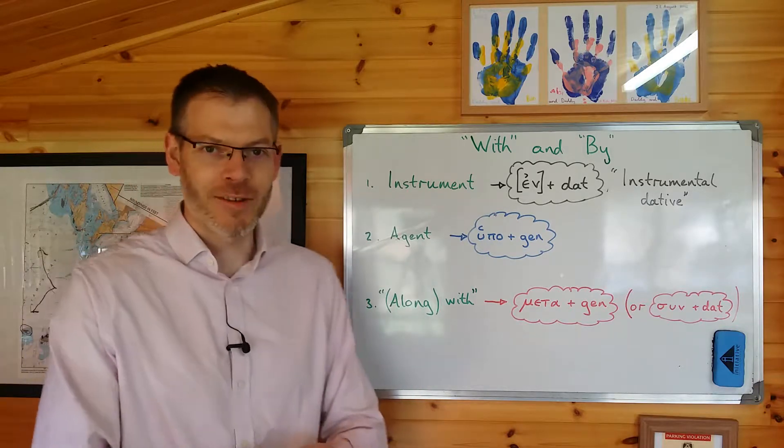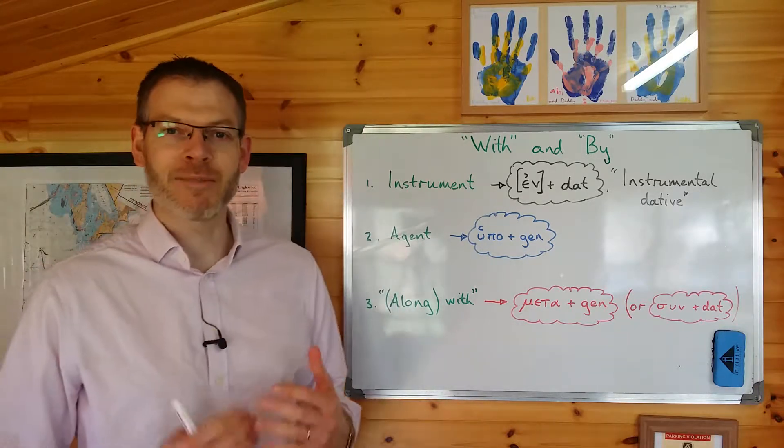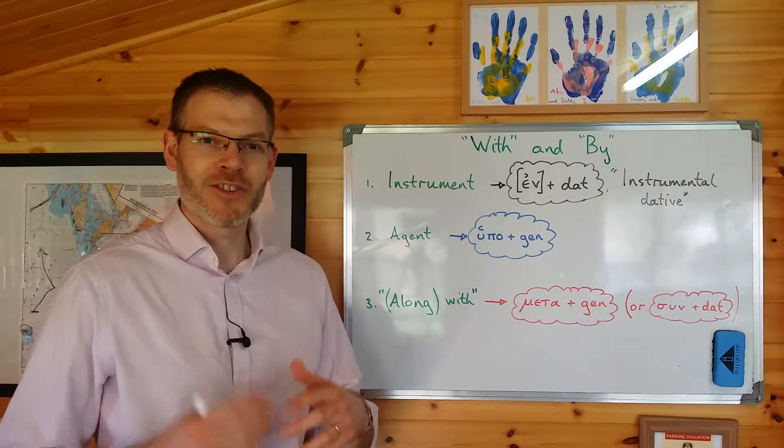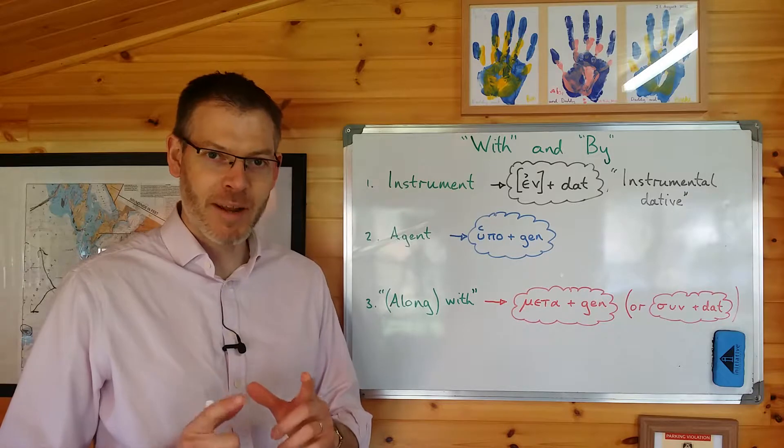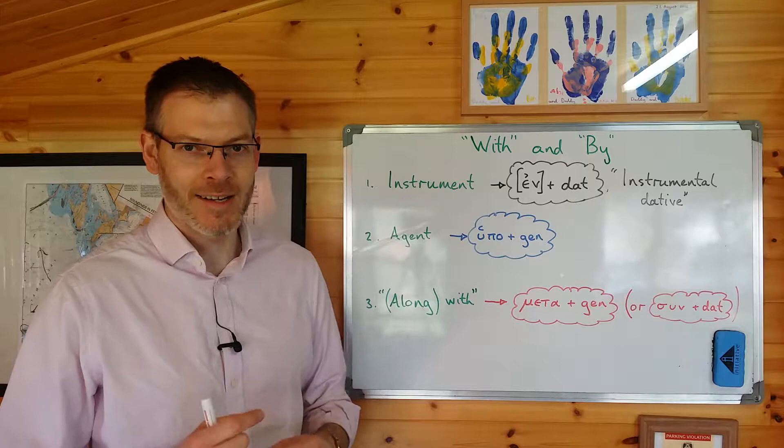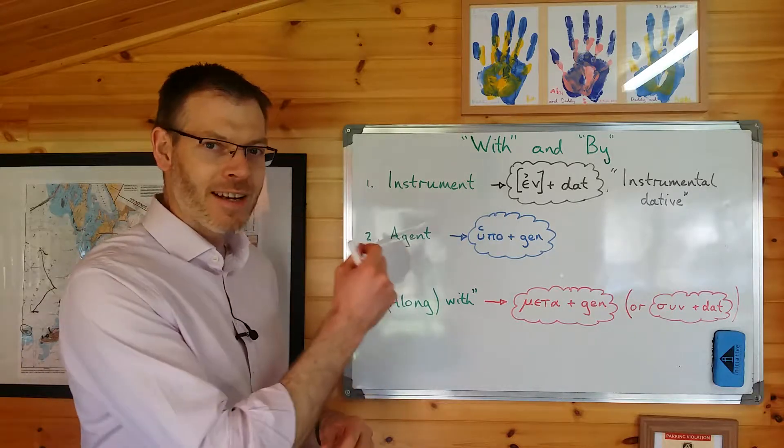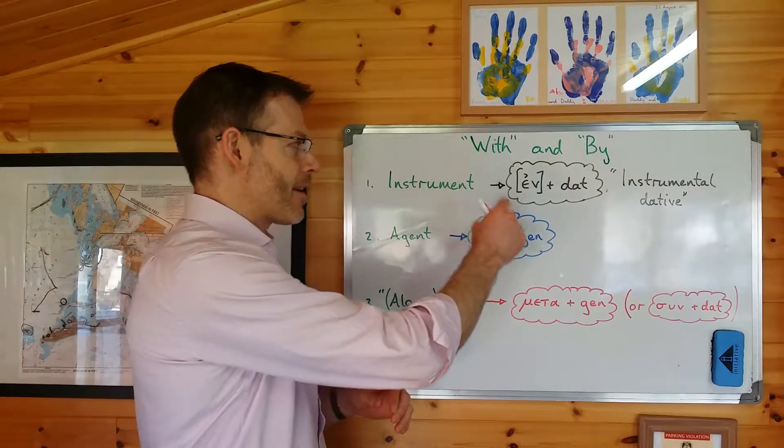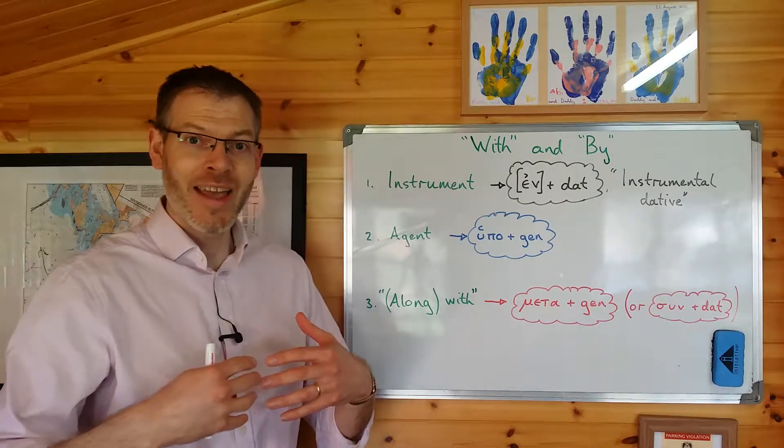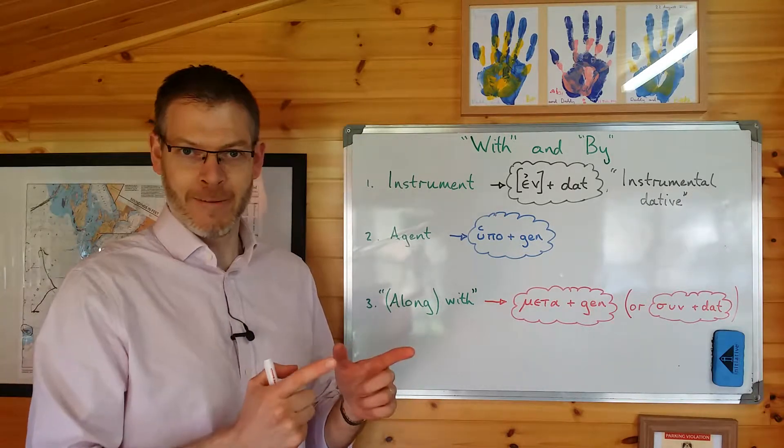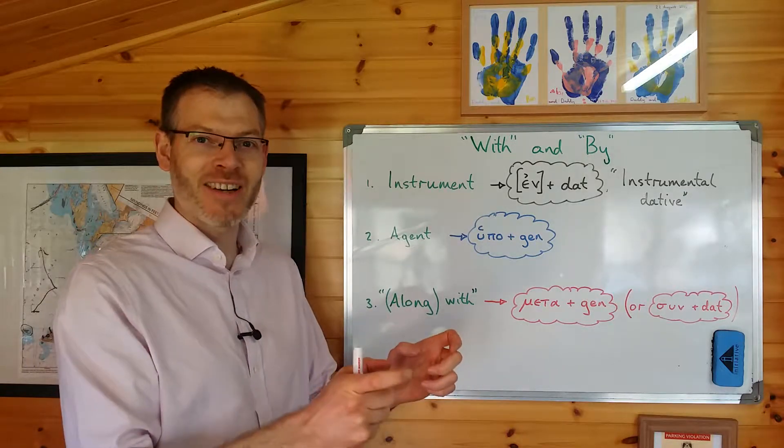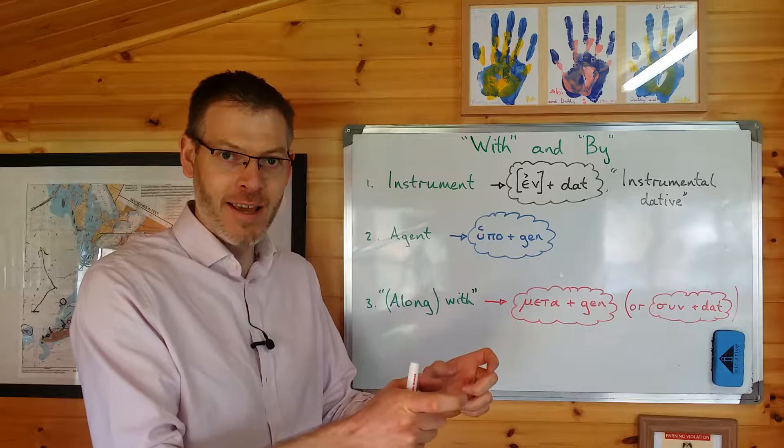Now it's worth pausing on these two words, as Duff does, because they sometimes cause a bit of confusion. The reason for the confusion needs to be understood before we start, so let me just explain where the confusion arises. The reason why this is sometimes a bit tricky for people to understand is that both of the English words with and by can be used in English in more than one sense, but those different senses of both words get translated differently in Greek.